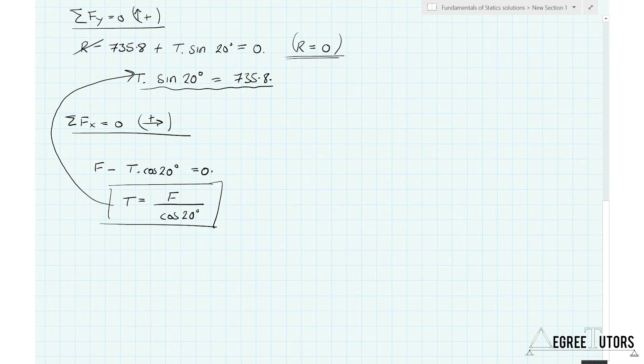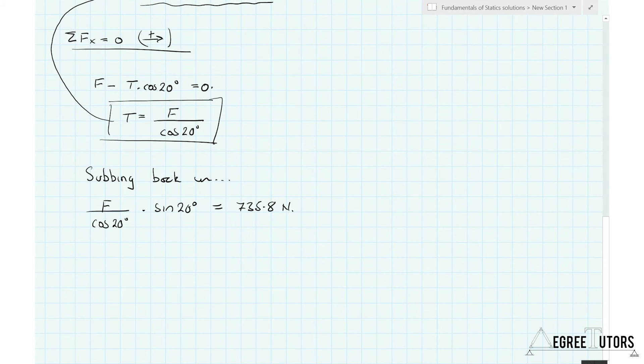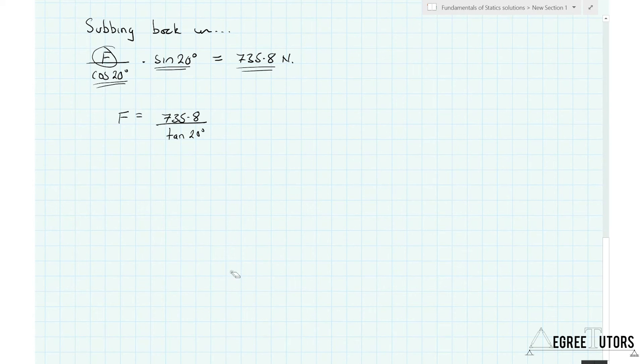Now we are at a position where we can substitute this expression for T back into the vertical force equilibrium equation. So what have we got then if we do that? Substituting back in, F over the cosine of 20 degrees, multiply that by the sine of 20 degrees, and all of that has to equal 735.8 newtons. So then you'll notice that that just evaluates to a number, this evaluates to a number, and that just is a number, so the only symbol is F and so we can solve for F and say that F is equal to 735.8, sine over cosine is equal to tan the tangent, so that's 735.8 over the tan of 20 degrees which just evaluates to a number, and that number is equal to 2021.6 newtons.